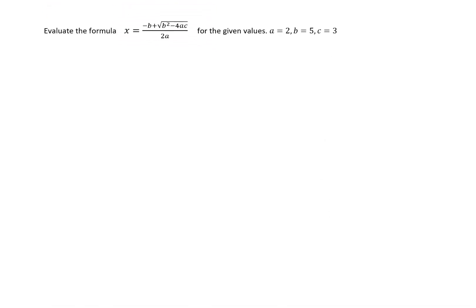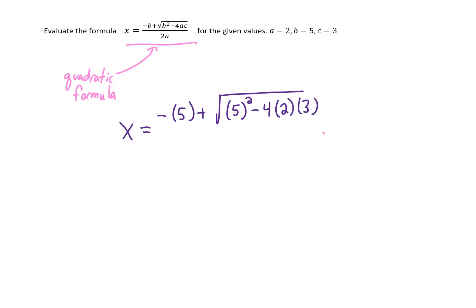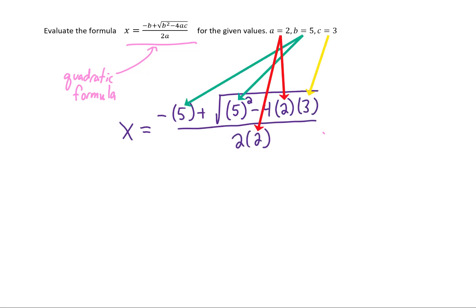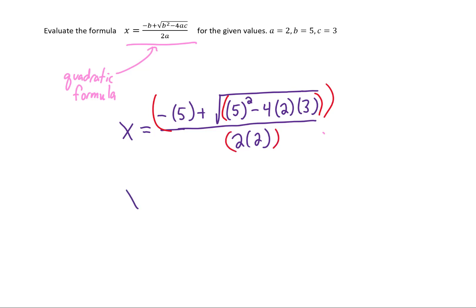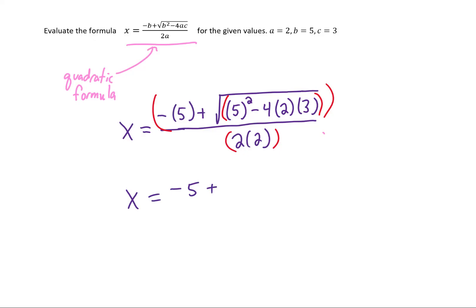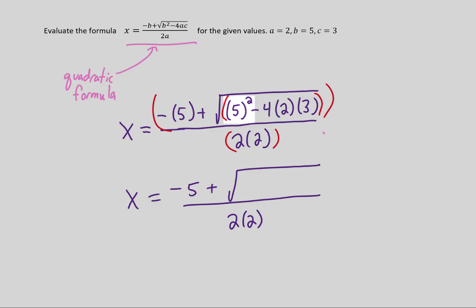This is at least part of the quadratic formula. We're given values for a, b, and c and asked to solve for x. After plugging in all values, we follow order of operations. Anything inside a square root has implied parentheses, as does any numerator or denominator. Let's start with the innermost parentheses — what is inside the square root in the numerator.